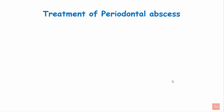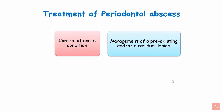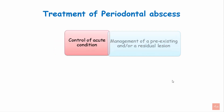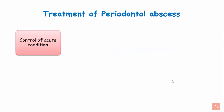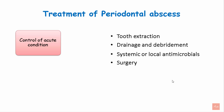Treatment of periodontal abscess is important to understand as it is a periodontal emergency. It involves control of the acute condition and management of the existing or residual lesion. The control of acute condition involves 4 therapies: tooth extraction, drainage and debridement, systemic or local antimicrobials, and surgery.